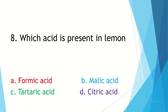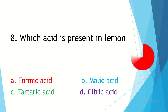Question 8. Which acid is present in lemon? Option A, formic acid. Option B, malic acid. Option C, tartaric acid. Option D, citric acid.